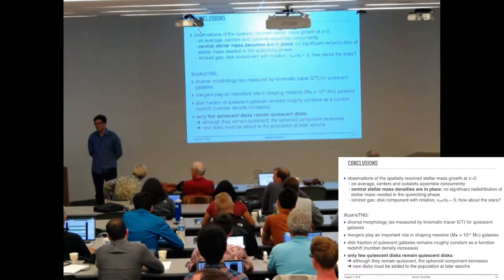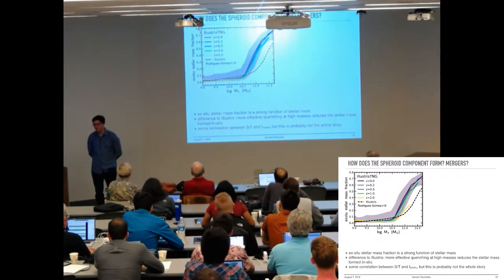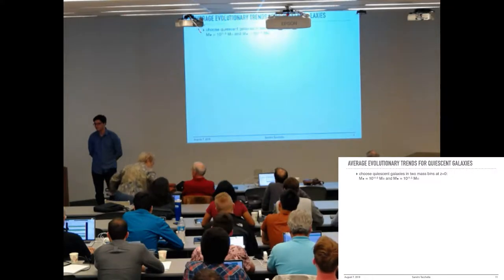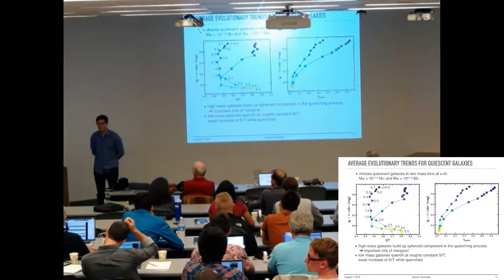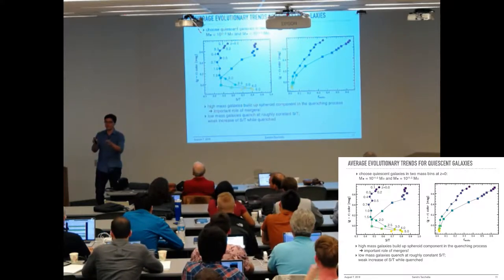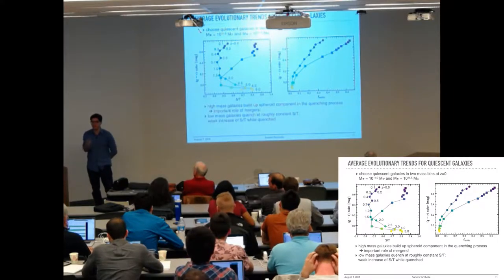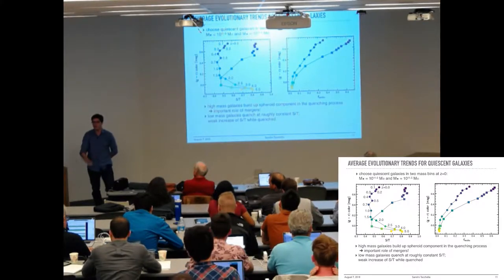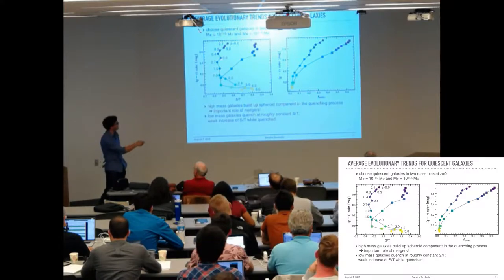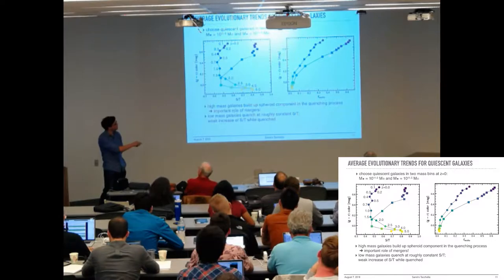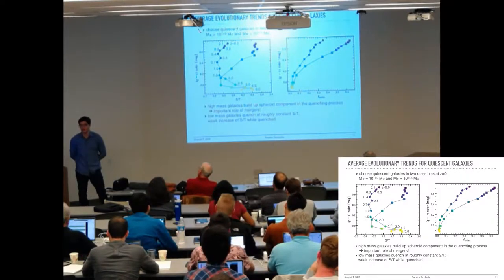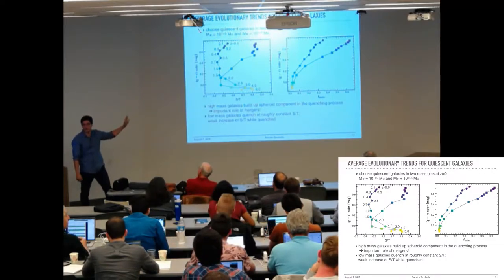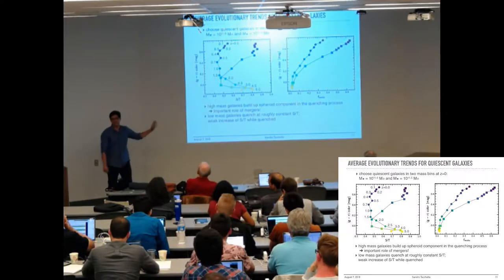Question from Kevin: In the spheroid-to-total plot evolving over time for two mass bins, the higher mass bin showed spheroid fraction going up along with greater ex-situ fraction — but what is the link between ex-situ and the morphological transition? Response: These are median trends for roughly 100 galaxies per bin. For lower mass galaxies, the ex-situ fraction changes very slightly and S/T doesn't change much when they quench. For higher mass galaxies, the ex-situ fraction jumps significantly, but I don't think it's a simple link — there is more to the story.